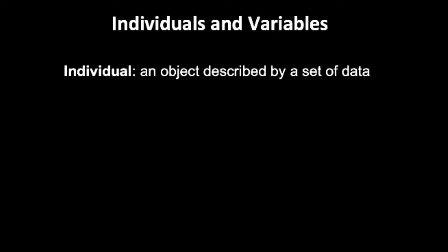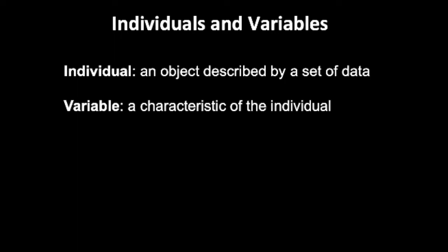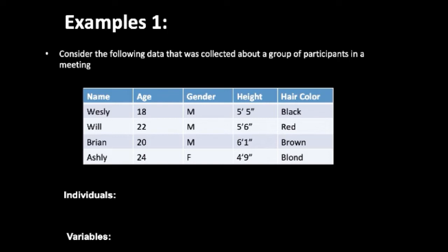Let me explain individuals and variables. An individual is an object described by a set of data. A variable is a characteristic of the individual. For example, consider data collected about a group of participants in a meeting. We have name, age, gender, height, and hair color. The individuals are the names, and the variables are age, gender, height, and hair color.